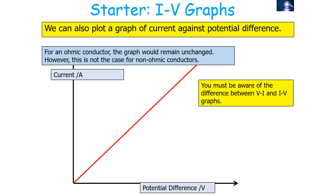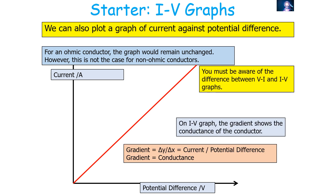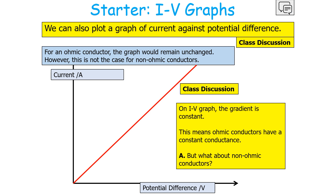You must be aware of the difference between VI and IV graphs. On an IV graph, the gradient shows not the resistance but the conductance of the conductor, or 1 over resistance, because the gradient is current over potential difference. So on an IV graph, this gradient is constant, similar to the VI graph for an ohmic conductor.